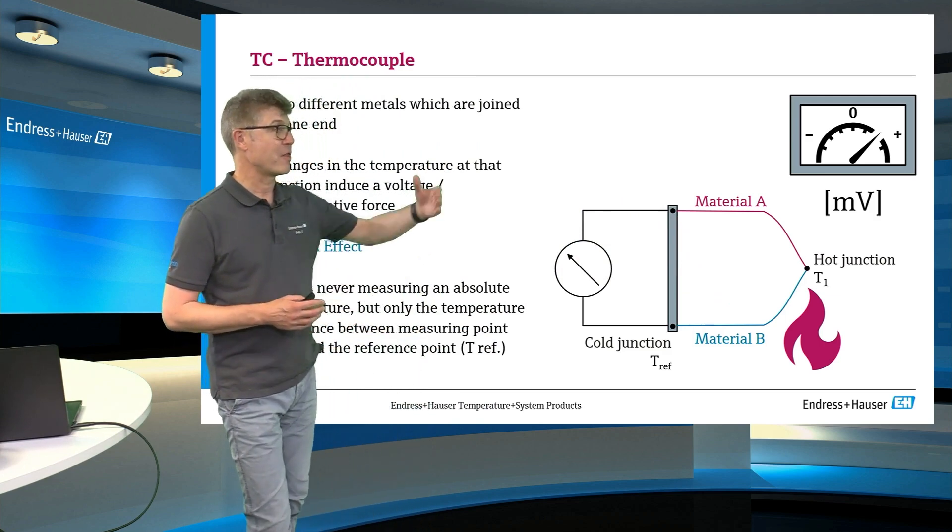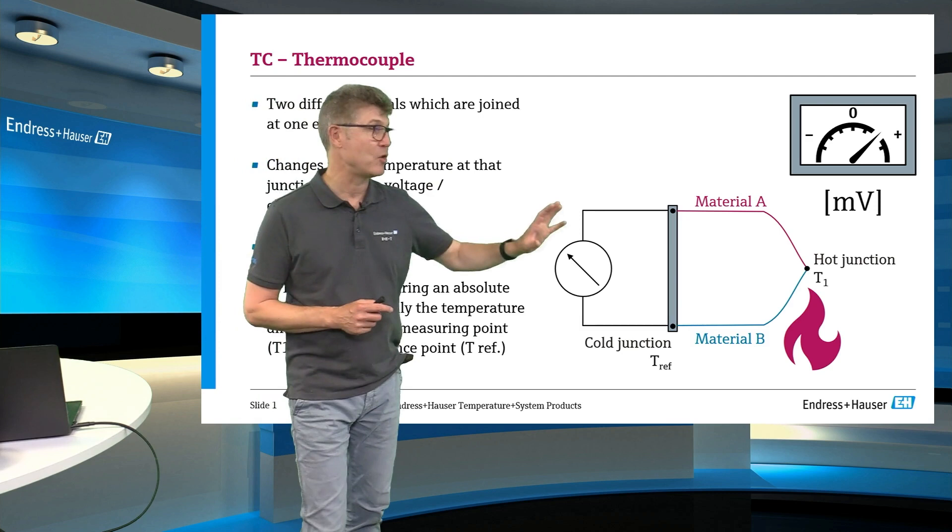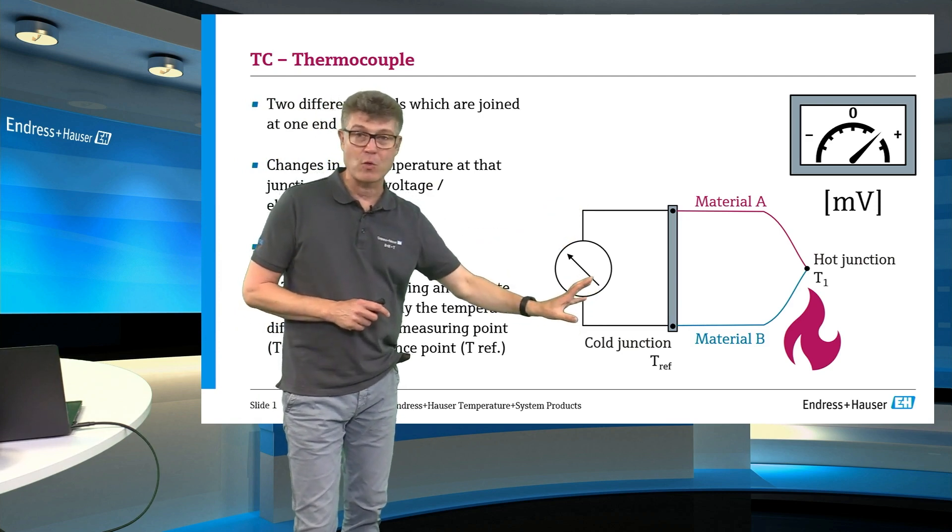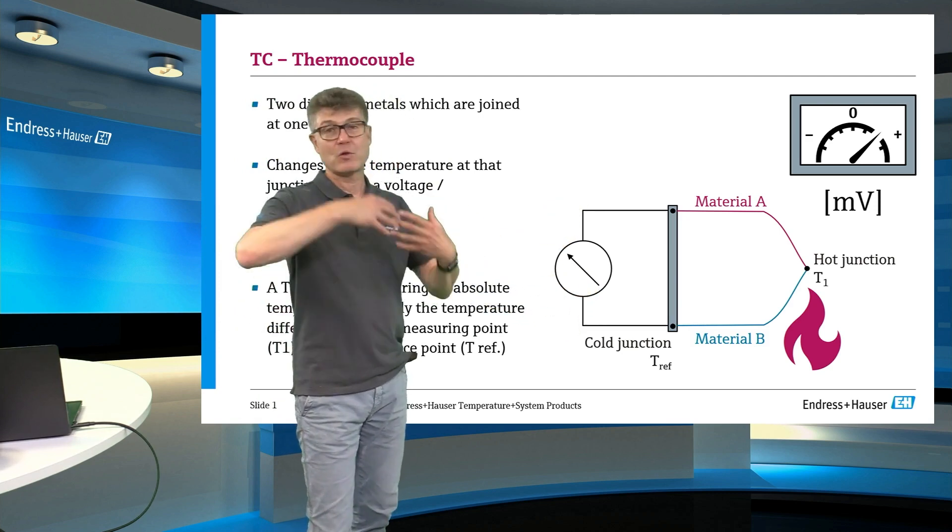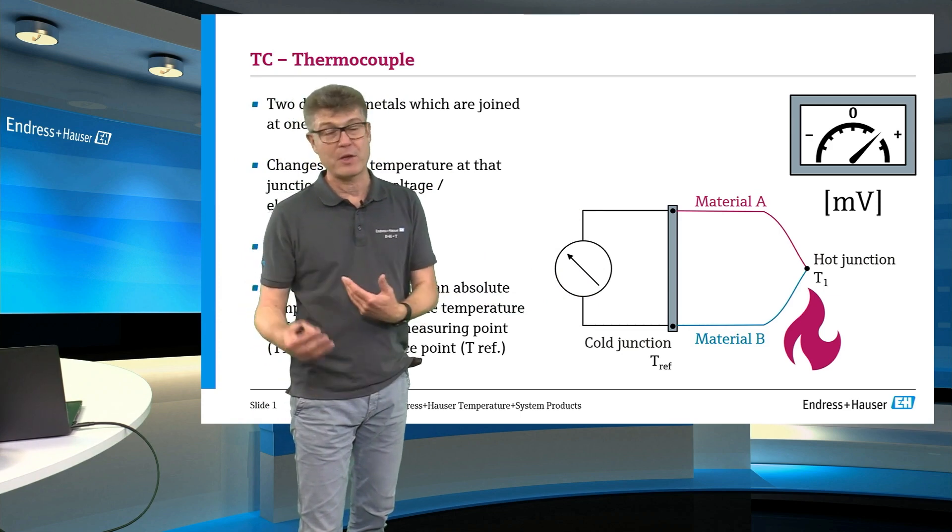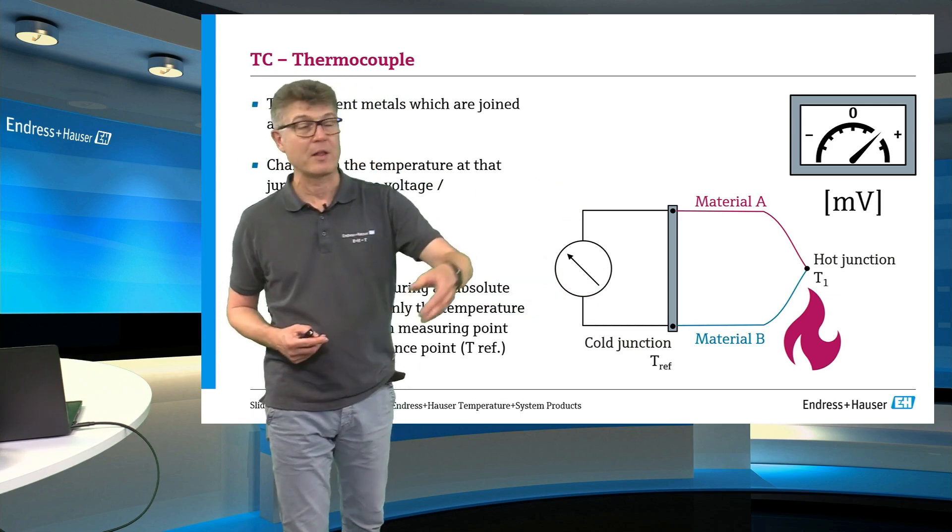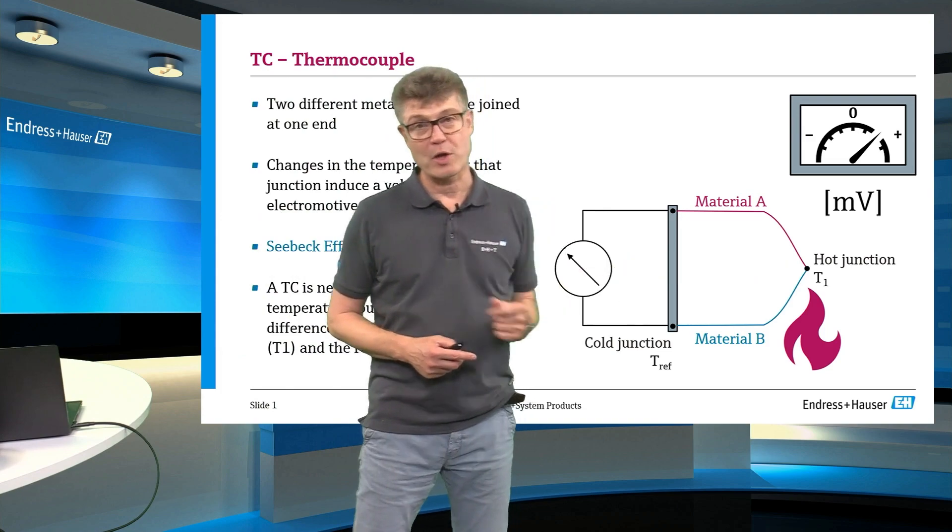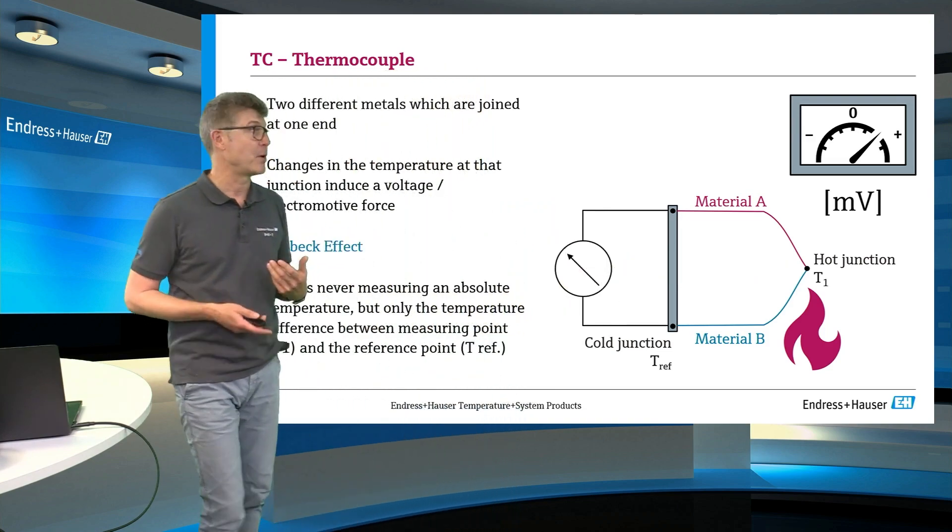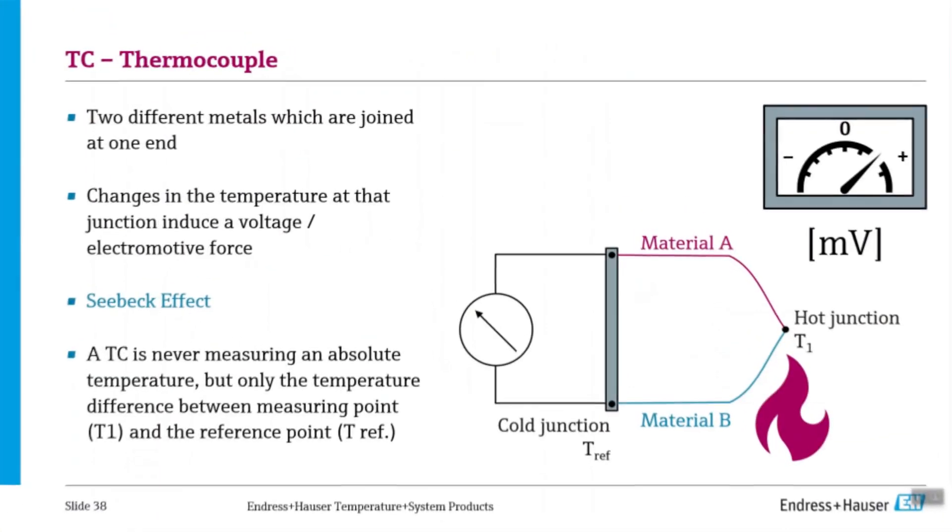And so, to measure the real temperature, we need to know the temperature of the cold junction. We need to know the characteristic curve of the material and then we can calculate what is the temperature at the hot junction. This is a general principle of a thermocouple measurement.